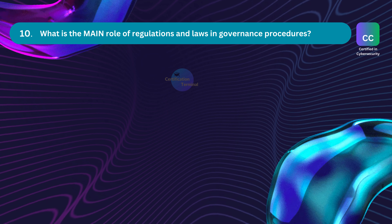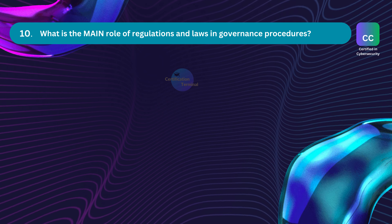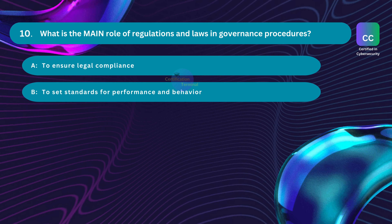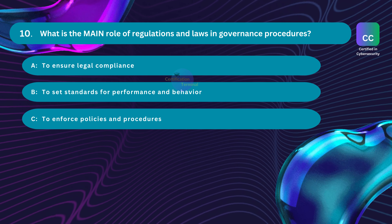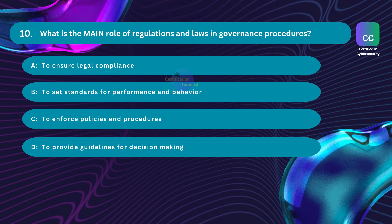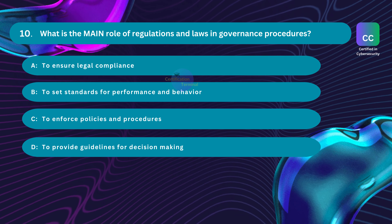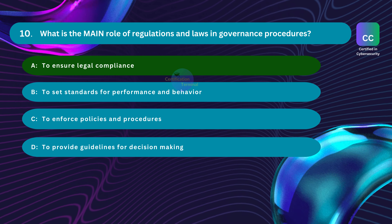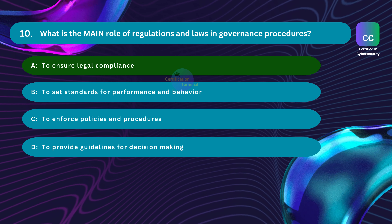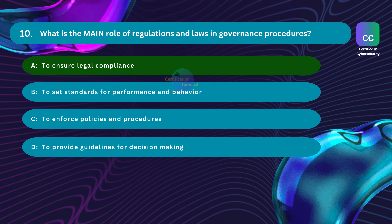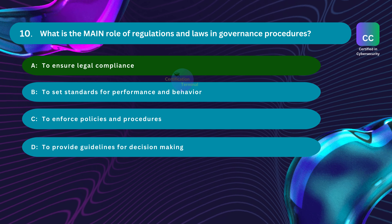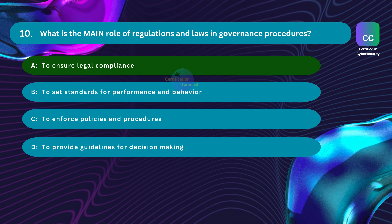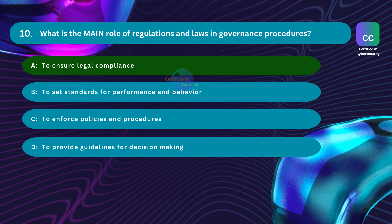Question number 10. What is the main role of regulations and laws in governance procedures? Option A: to ensure legal compliance. Option B: to set standards for performance and behavior. Option C: to enforce policies and procedures. Option D: to provide guidelines for decision-making. The correct answer is Option A: to ensure legal compliance. Regulations and laws represent obligatory and enforceable guidelines that organizations must adhere to. They aim to ensure that businesses operate within legal boundaries, safeguarding both individual rights and the public interest. Non-compliance can lead to penalties and legal repercussions, covering various aspects of conduct, operations, and interactions.